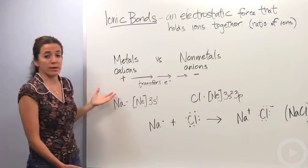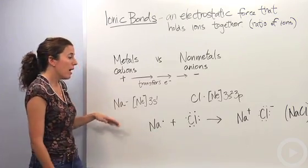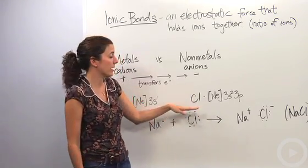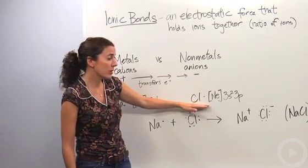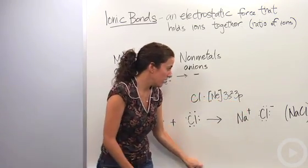All right, so let's take one for example. Let's do sodium. We know sodium has the electron configuration of Neon 3s1, and it comes with chlorine. This is typical table salt, the one you put on your dinner to flavor your food. So chlorine has the electron configuration of Neon 3s2, 3p5.